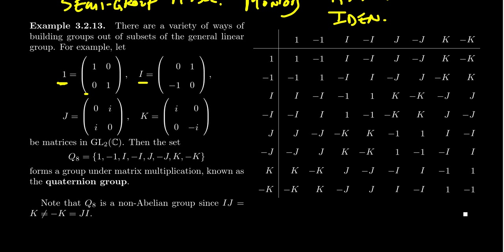We're going to use the symbol J to denote the matrix [0, i; i, 0]. I should mention that these are complex matrices because we're using imaginary numbers. And then the matrix K will be the matrix [i, 0; 0, -i]. So these are four particular matrices I'll be interested in. Notice that 1 is of course the identity matrix. So we're going to take a set of matrices in GL_2(C) — two by two matrices with complex coefficients.